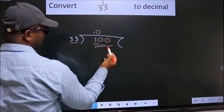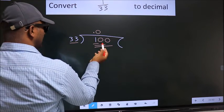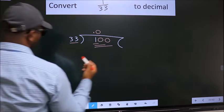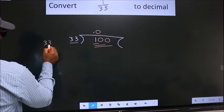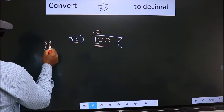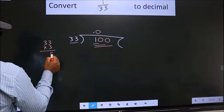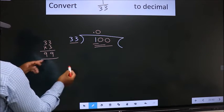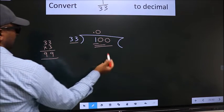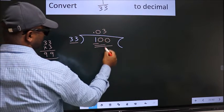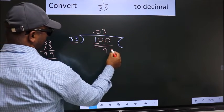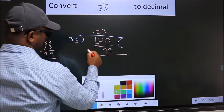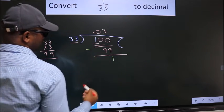A number close to 100 in the 33 times table — we take 3. 33 into 3: 33 times 3 is 99, which is close to 100. So we take 3 times, giving 99. Now we subtract and we get 1.